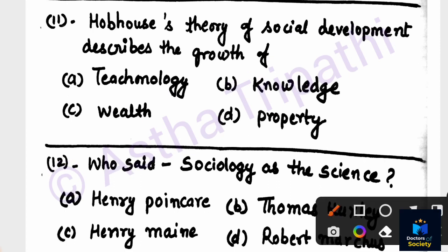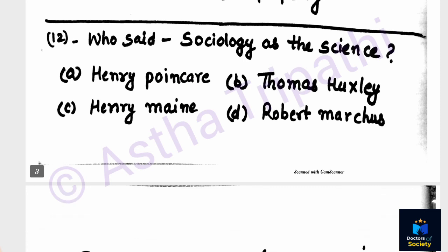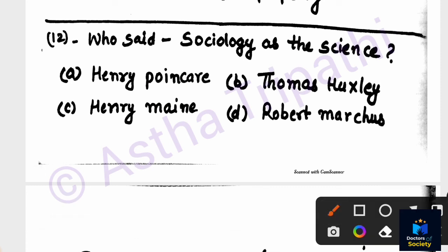Question number eleven: Hobhouse's theory of social development describes the growth of what? Options are Technology, Knowledge, Wealth/Property, or Technology again. The answer is option B — Knowledge. Hobhouse worked on knowledge, morals, and related themes in his social development theory.